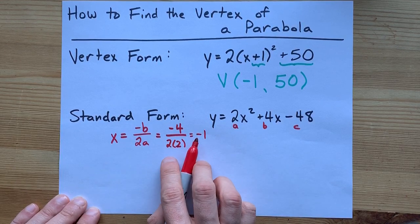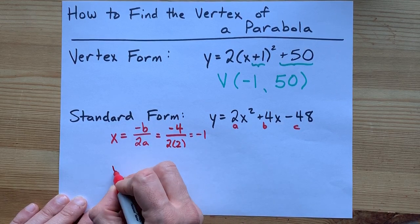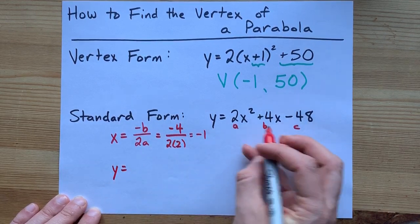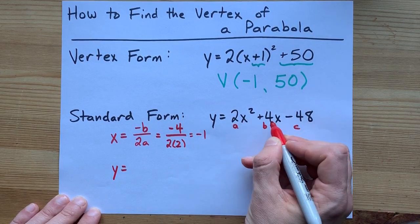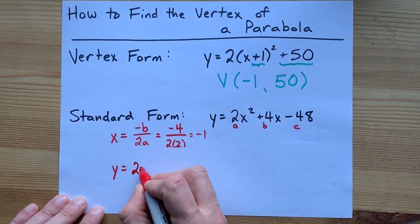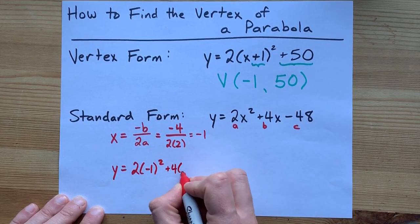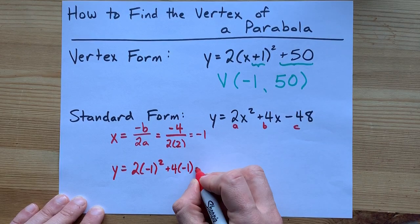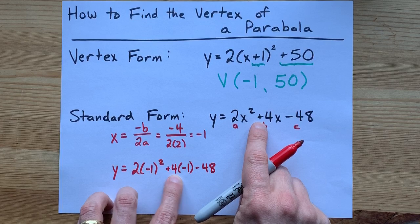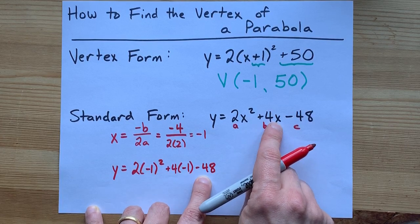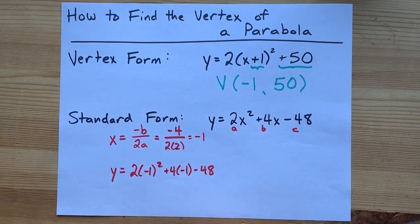Now, that's just the x-coordinate of the vertex. We're going to have to find the actual y-coordinate, and we can get that by plugging this x value that you just found in for both of the x's here. 2 times negative 1 squared plus 4 times negative 1 minus 48. See? 2x squared plus 4x minus 48. Except all the x's are negative 1, because x equals negative 1.